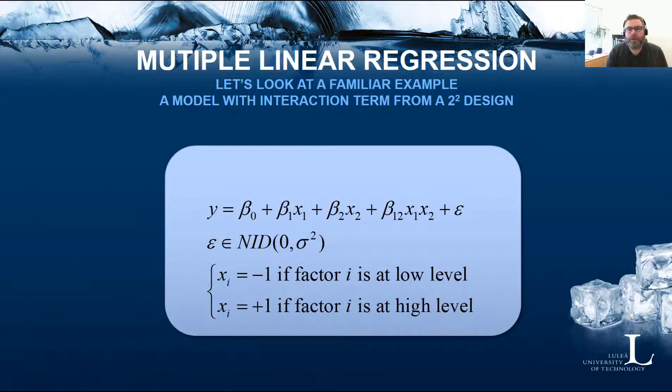Let's look at a familiar example. This is a regression model assumption for a two level factorial design with two factors and one interaction term. The linear part in terms of linear regression is based on the fact that Y is a linear function of the beta coefficients. It has nothing to do with the underlying response surface. It's only a matter of the function being linear in terms of the beta coefficients.